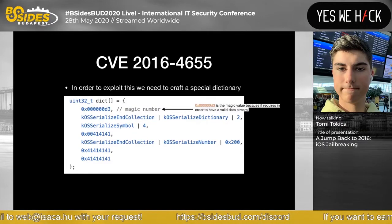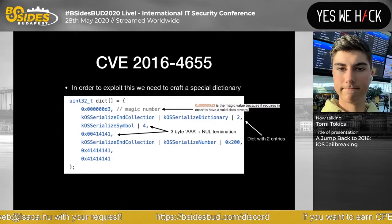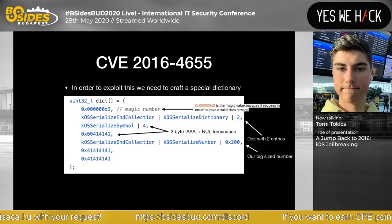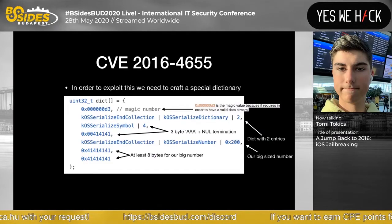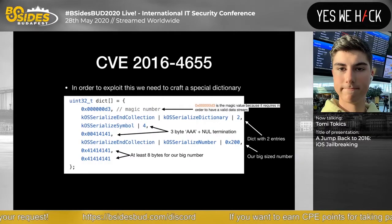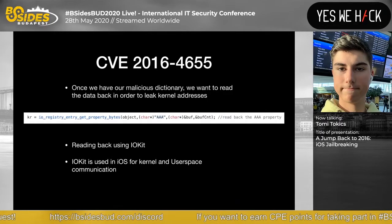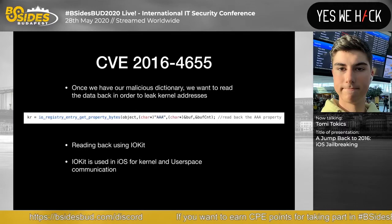The dictionary looks like this: first a magic number required for the function to accept our input, then a dictionary with two entries — a three-byte 'AAA' plus null terminator, and our large size number with at least eight bytes for the value. Normally you'd only read those eight bytes back, but with the missing length check that's not the case. We then read the data back to leak the bytes.